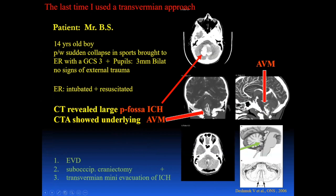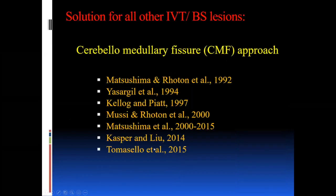The last time I used the transvermian approach was a 14-year-old boy who collapsed on the soccer field, came in with a GCS of 3 and pupils small at 3 millimeter but essentially fixed in mid-position, no signs of external trauma. CTA showed a large intraaxial hematoma fed by an AVM. We did a posterior craniectomy with a mini tunnel approach to suck out the clot, leaving a small portion on the AVM to prevent re-bleeding while decompressing the posterior fossa. That is really the only emergent scenario where the transvermian approach is still suitable.